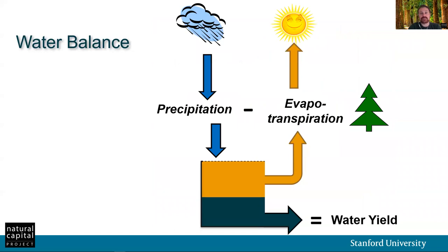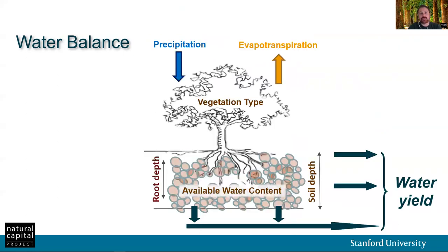Of course, for the purposes of InVEST's SWY model, the cycle is simplified. Water precipitates onto the surface and evapotranspiration, or ET, returns it to the atmosphere. ET is evaporation plus transpiration. On a very basic level, precipitation minus ET equals water yield. An important point about transpiration is that vegetation type greatly influences transpiration rates, so some plant taxa are more efficient or more capable of transpiring greater quantities of water than others. Of course, transpiration also depends on the quantity of water available. This is where we differentiate between potential ET or PET, which is ET under an unlimited water supply scenario, and actual ET, or AET, which is the actual realized ET. AET is limited either by plant demand (PET) or by the availability of water.